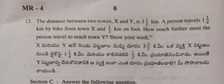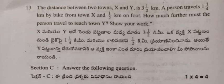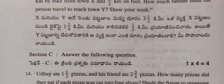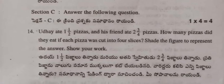Question 13: The distance between two towns X and Y is 3 and 1/2 kilometers. A person travels 1 and 1/4 kilometers by bike from town X and 1/2 kilometer on foot. How much further must the person travel to reach town Y? Show your work.